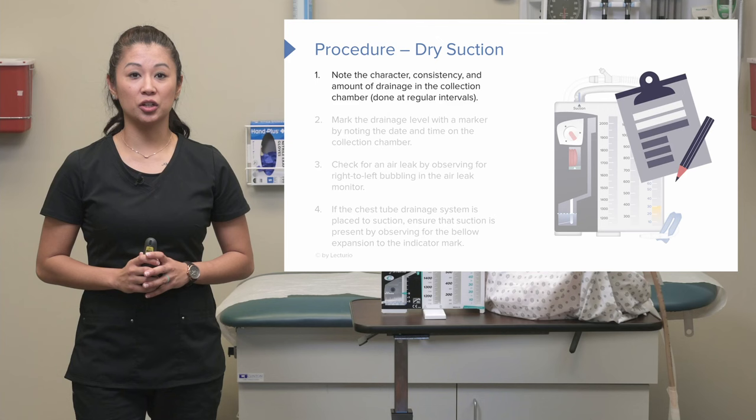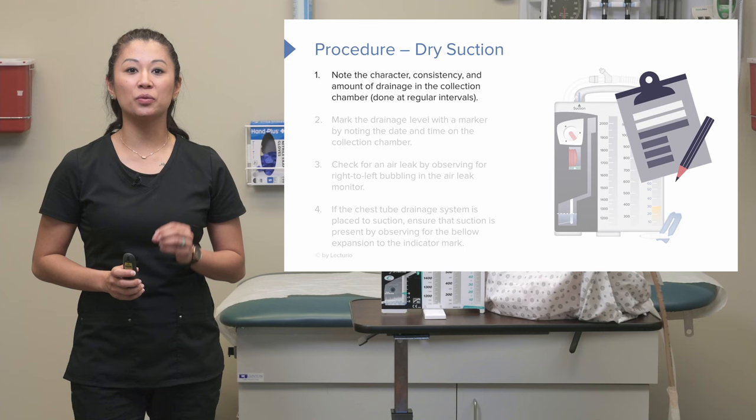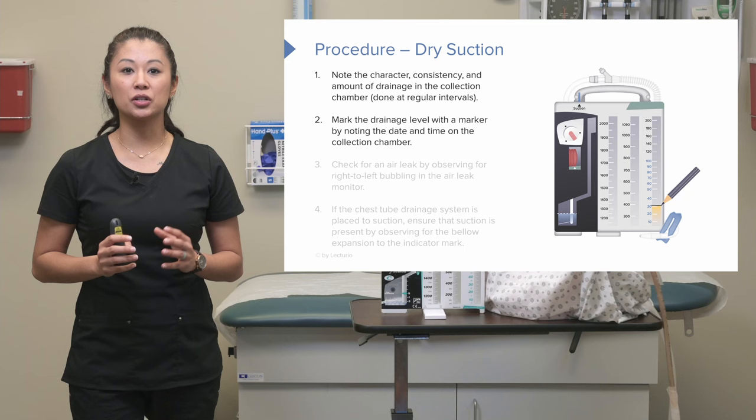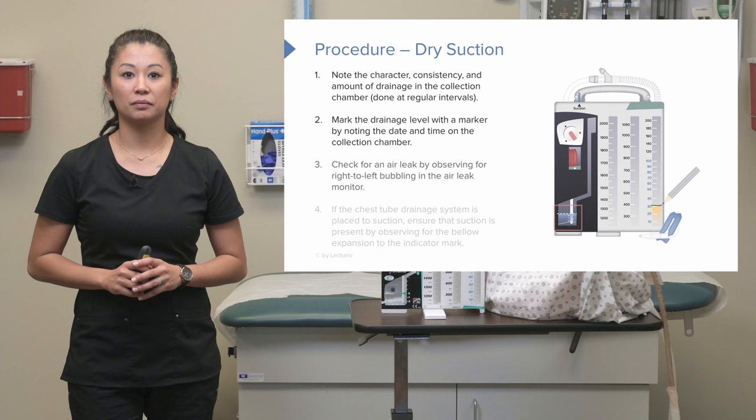We just talked about wet suction monitoring — now let's take a look at the dry suction system. Just as before, we're going to note the character, consistency, and amount of drainage in the collection chamber. This needs to be done each shift and at regular intervals. We can mark the drainage level with a marker, noting the date and time on the collection chamber itself.